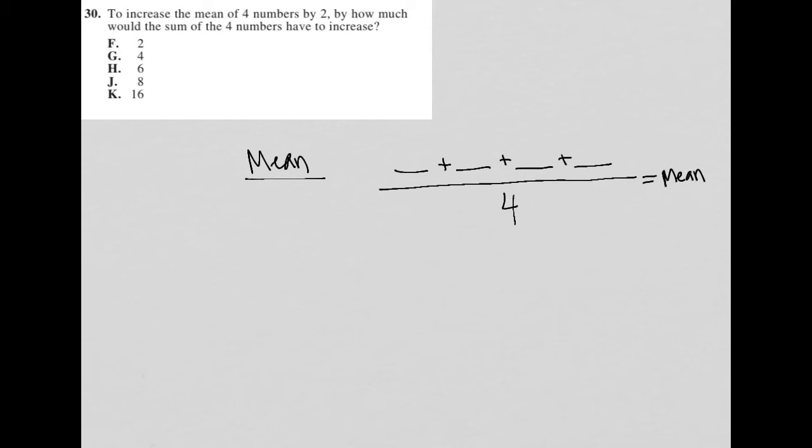So you can see that in this question, there's a lot that I don't know. I don't know what the mean is, and I don't know what any of the numbers are. I don't know what the sum of those numbers are. So what I'm going to use is a strategy called plug in your own numbers, and I'm going to make up some numbers to put in these blanks.